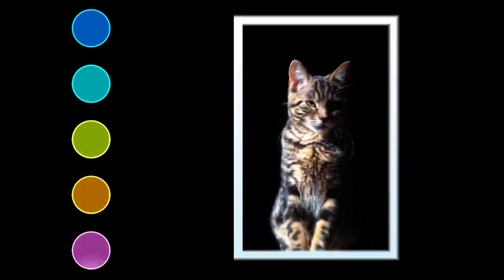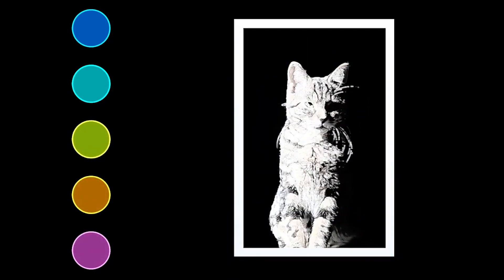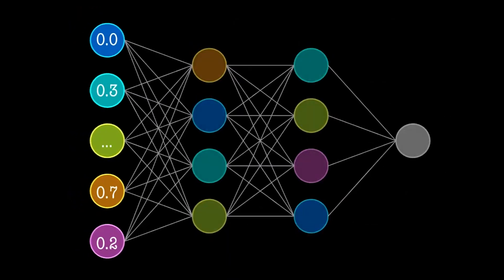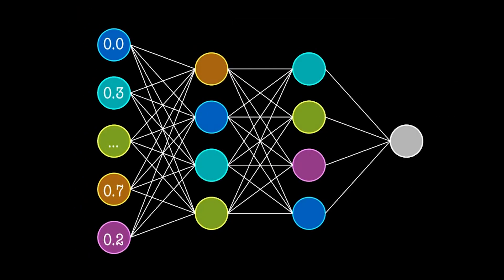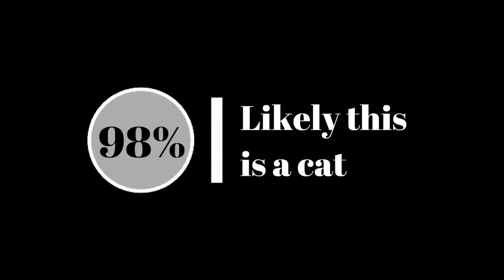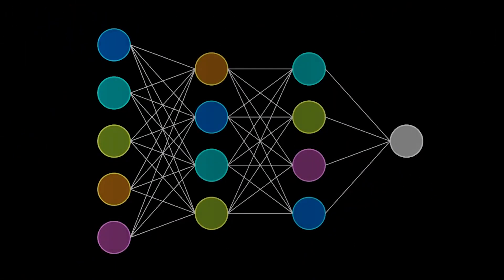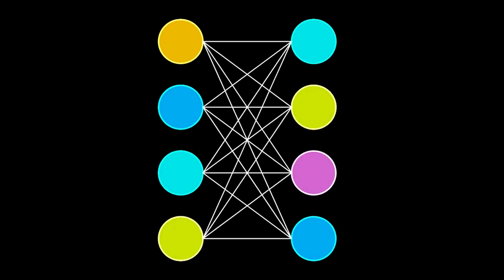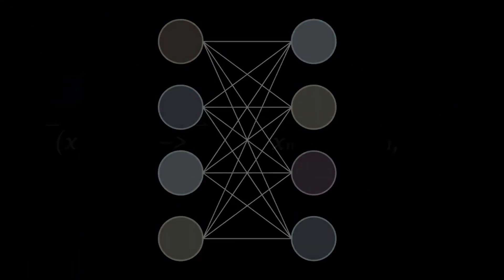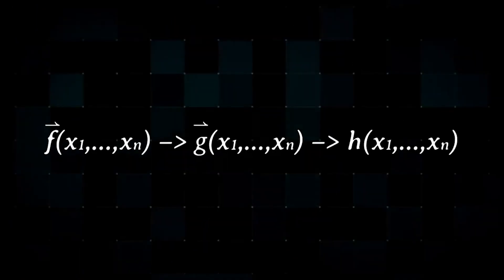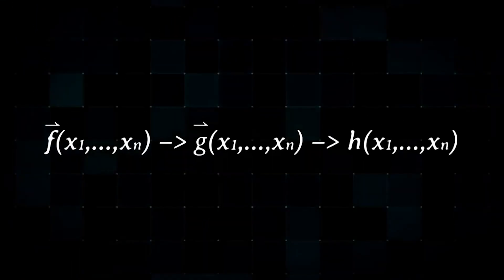The leftmost neurons contain information directly collected from the pixels of an image. The rightmost contains the computer's response. How do we get to that response? By running the information through the middle neurons, which are nothing more than mathematical functions.